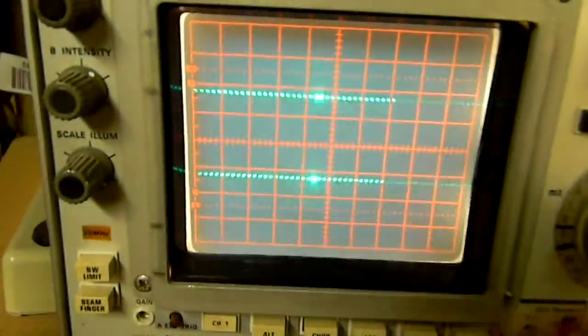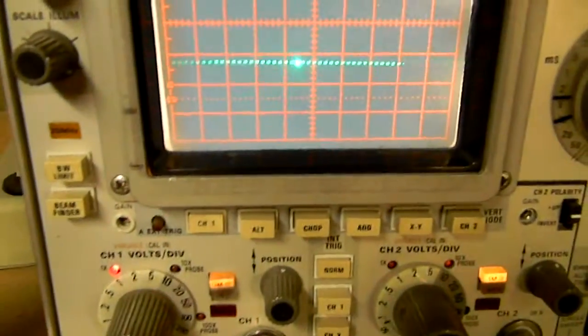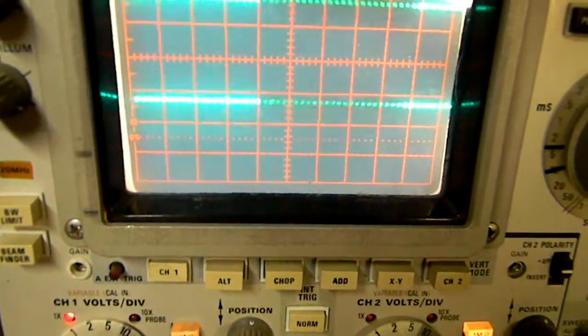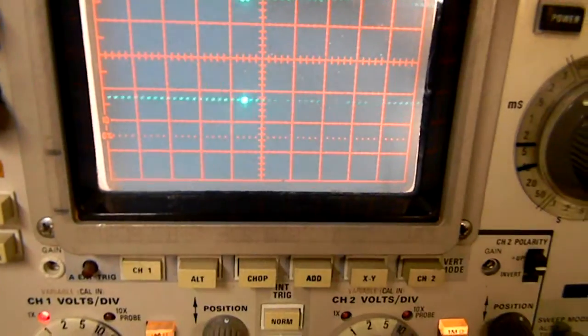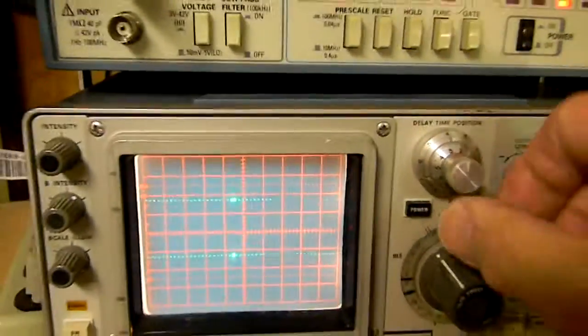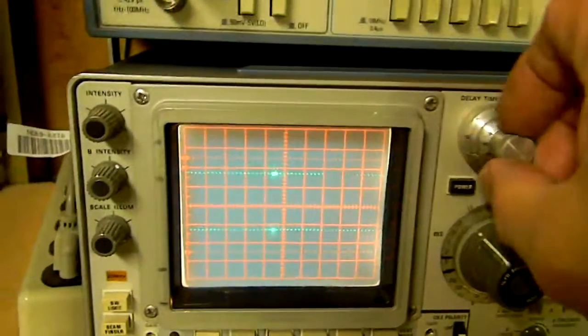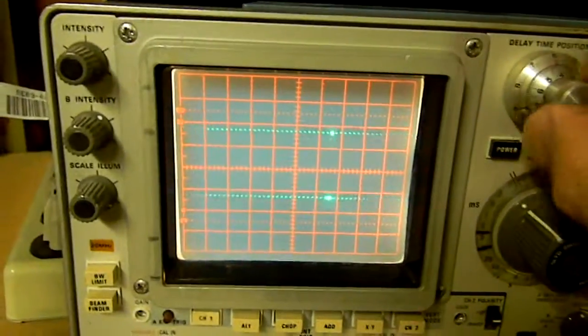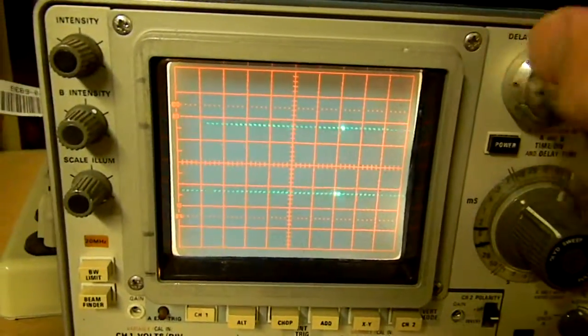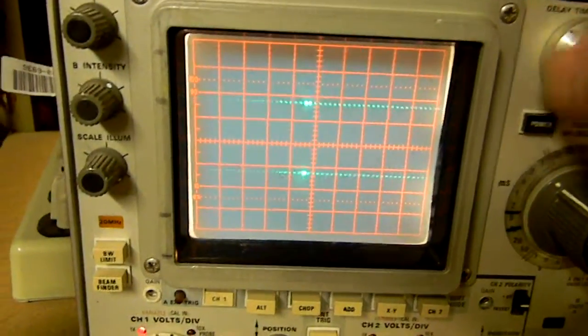Now if you use the intensified, turn intensity back up here, that's the piece that we're looking at right there. See the bright piece? If I turn this all the way down, there's the bright piece that we're looking at. And as we turn the delay time position, we can see it scrolling through. So we can select that piece that we want to look at.